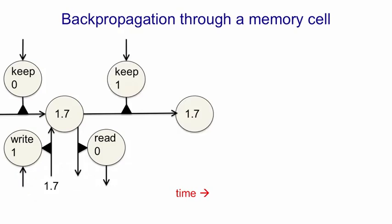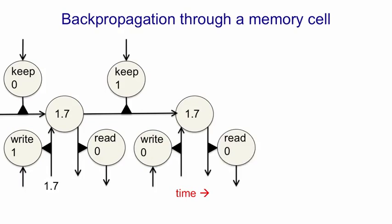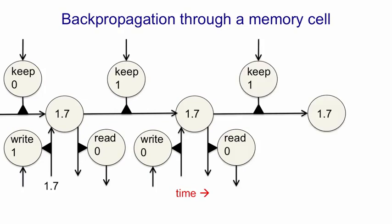We then set the keep gate to 1 — or rather, the rest of the neural network has to set the keep gate to 1 — and that means the value is written back into the memory cell and stored. At the next time step, we're going to set the write gate to 0 and the read gate to 0, so the information isn't influenced by what's going on in the rest of the net and doesn't influence it either. It's insulated. Again, at the next time step, the keep gate is set to 1, so the information is stored for one more time step.